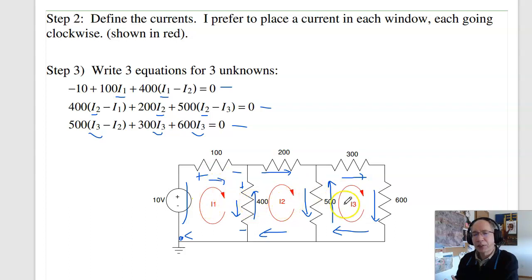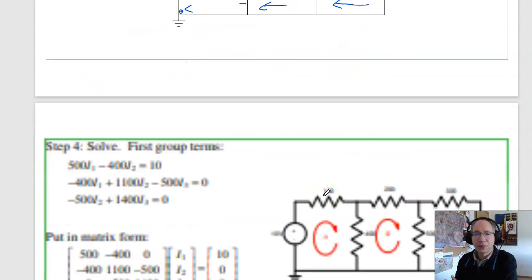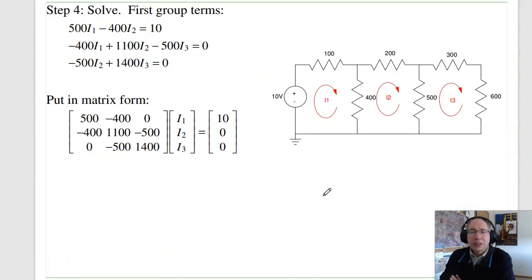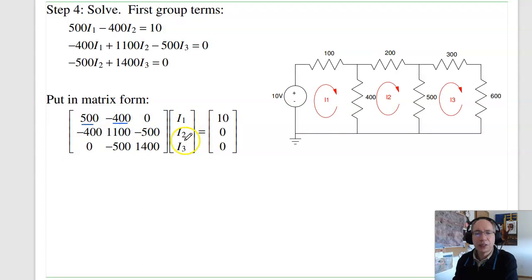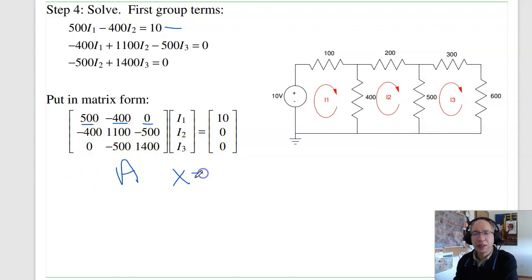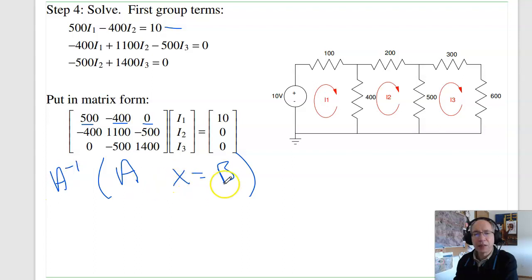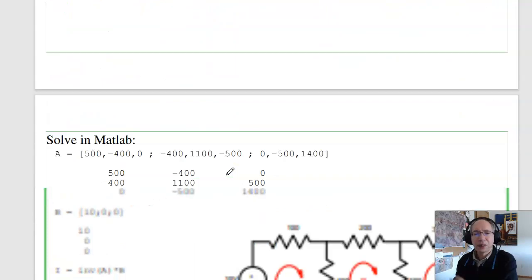Once I get three equations, three unknowns, on a quiz or test you're probably done. On the homework I can solve. I group the terms, put in matrix form: 500 I1 minus 400 I2 equals 10 (first equation); minus 400 I1 plus 1100 I2 minus 500 I3 equals 0 (second); and the third equation. In MATLAB, if I write it as A times x equals B and multiply on the left by A inverse, I have x equals A inverse times B.